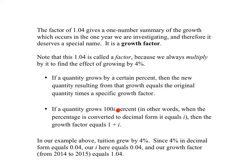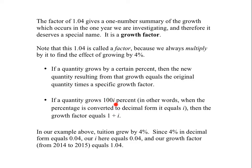If a quantity grows by 100i percent — in other words, when the percentage is converted to decimal form it equals i — then the growth factor equals 1 plus i. In our example, tuition grew by 4%. 4% in decimal form equals 0.04, so i equals 0.04, and our growth factor is 1 plus 0.04, which is 1.04. The 100i notation is simply about converting back and forth between decimal and percent form.